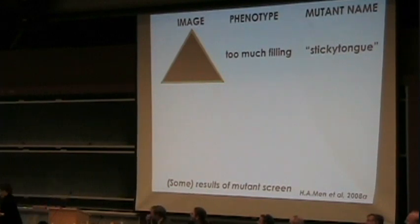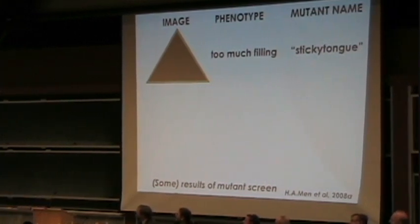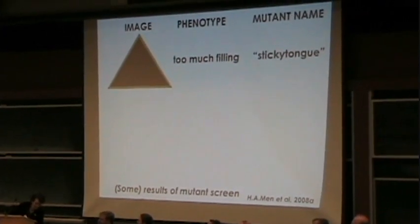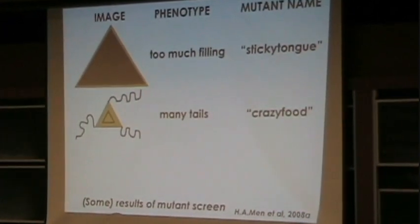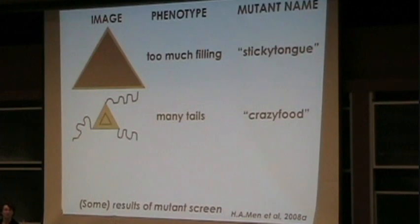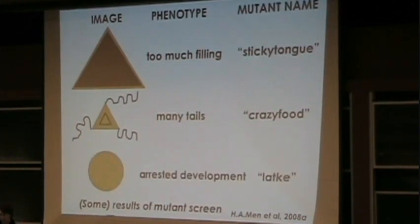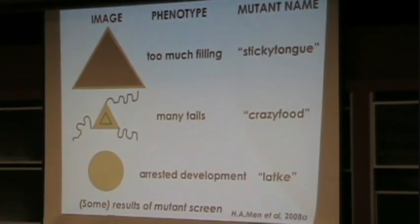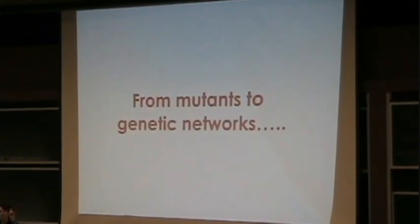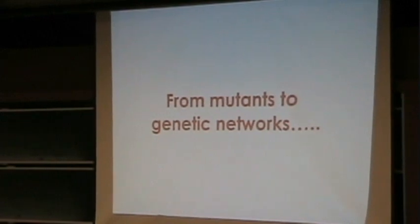I want to tell you just a few of them — show you what they look like, explain their phenotype, and tell you their names. Here's one the students called 'Thicky Pump.' Here's 'Violet.' This one's kind of cute — 'Crazy.' But this next one arrests development at this stage; the students call it 'Latka.'